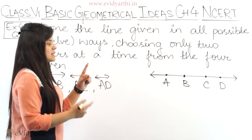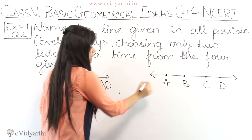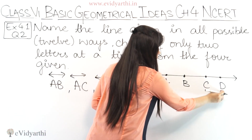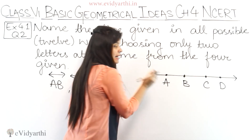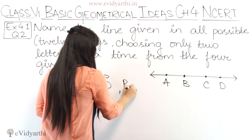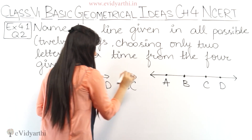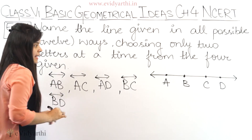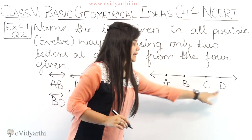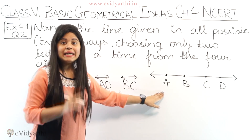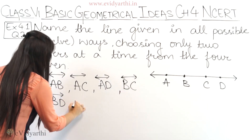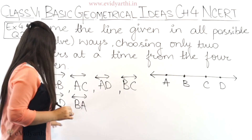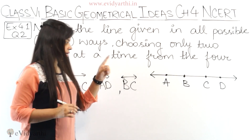So B to C is a line, then we have B to D — so BD is a line. Next we have B to A, so BA is a line. From B points we have 3 lines: BC, BD, and BA.